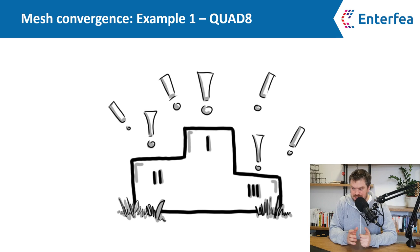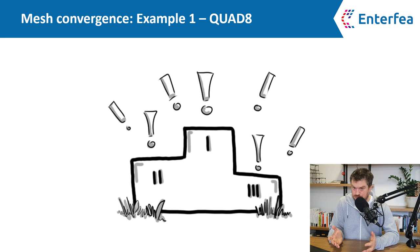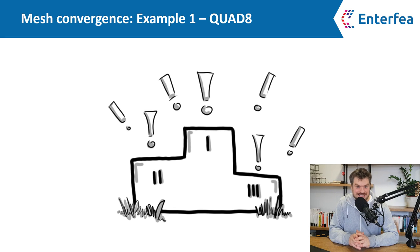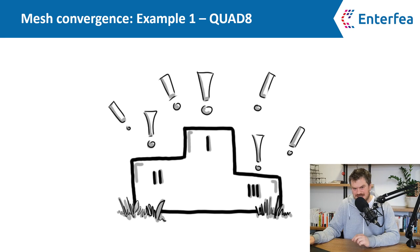So is the quad eight element a clear winner? Not really. If quad eight element were universally superior, nobody would program any other element type. It just so happened that the cantilever problem we just solved was super favorable to quad eight elements — and this is why they shine. So let's do something slightly different to show you how this really works.